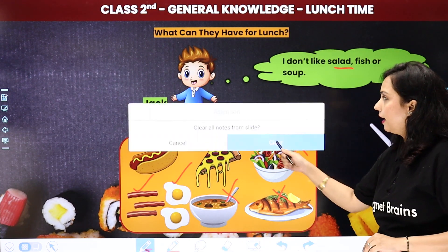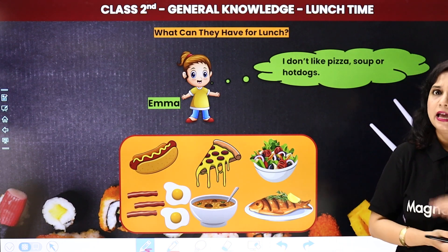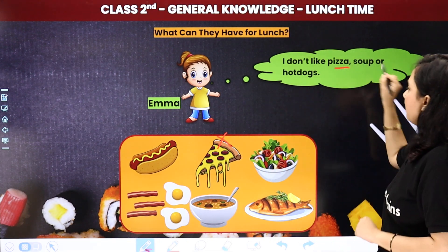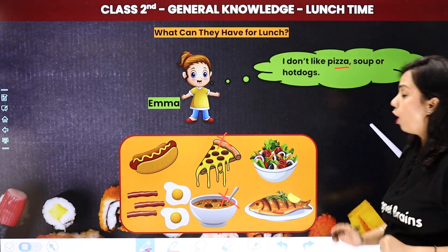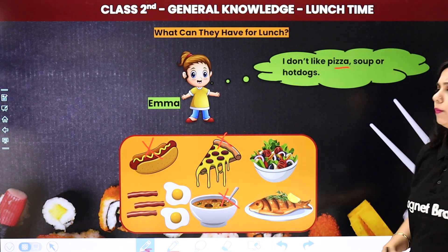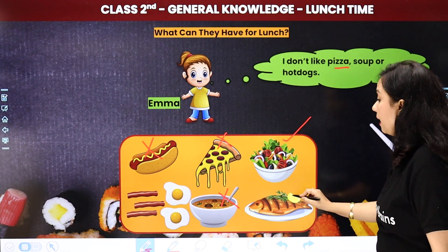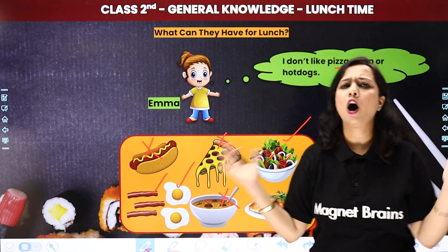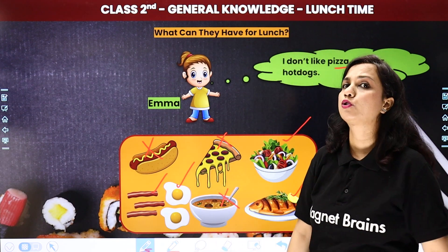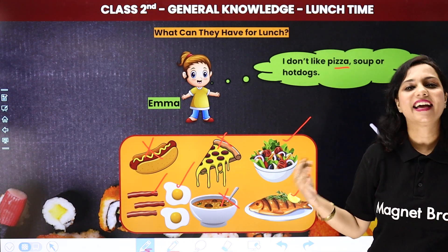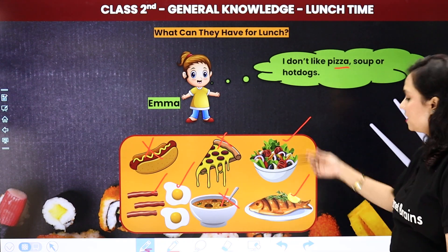Aage aapka friend Emma hai. Emma kya kha rahi hai? Emma doesn't like pizza, she doesn't like soup, and Emma ko hot dog bhi nahi khana. Toh Emma kya kha sakti hai? Emma has very good options — Emma can have salad, fish, bacon, and eggs. All healthy foods! So, Emma, you are a good girl, kyunki Emma kha rahi hai healthy food. She is not saying no for the healthy foods and rather saying yes for unhealthy foods — usne unhealthy ko kar diya hai cross aur healthy cheezein kar diya hain in.